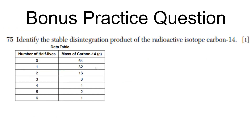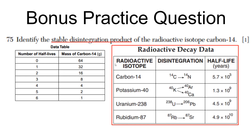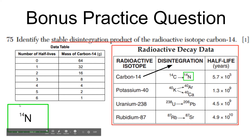One last question: identify the stable disintegration product of the radioactive isotope carbon-14. Go to your reference tables — carbon-14 is the radioactive isotope, and the disintegration product is listed there. Nitrogen-14. The stable disintegration product is nitrogen, or nitrogen-14 if you're typing the answer online.